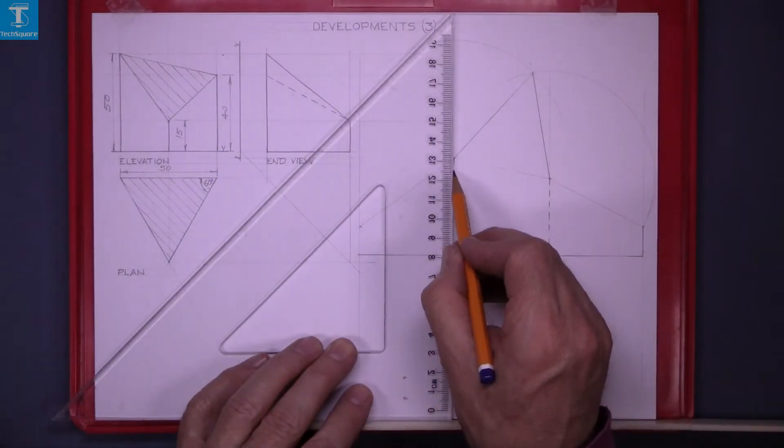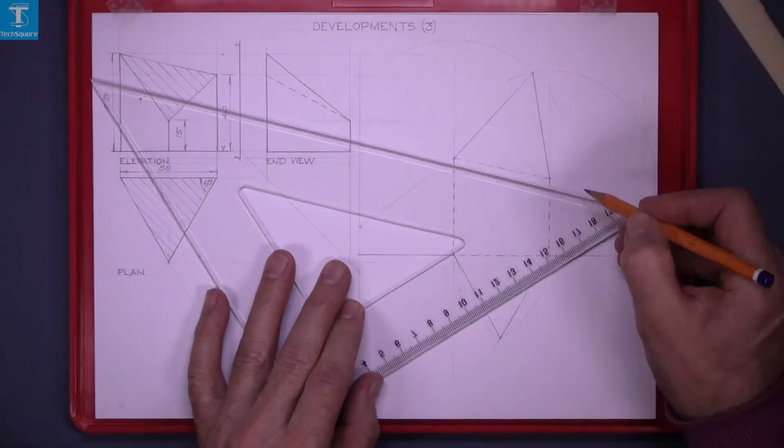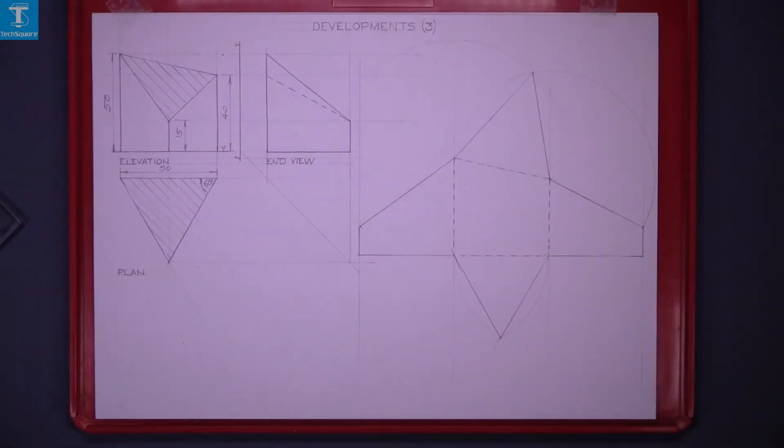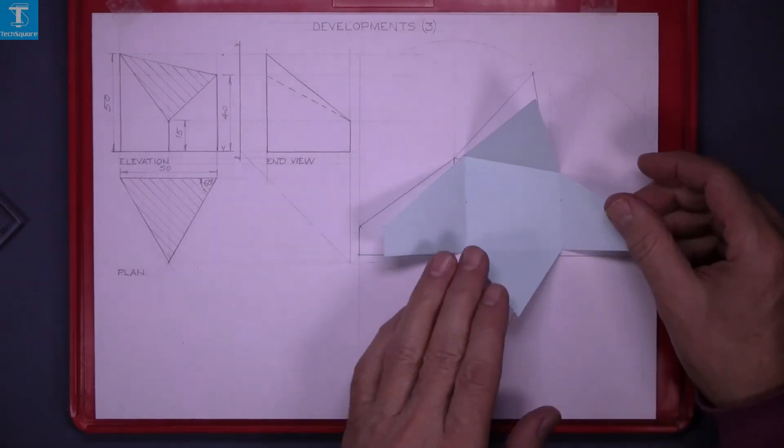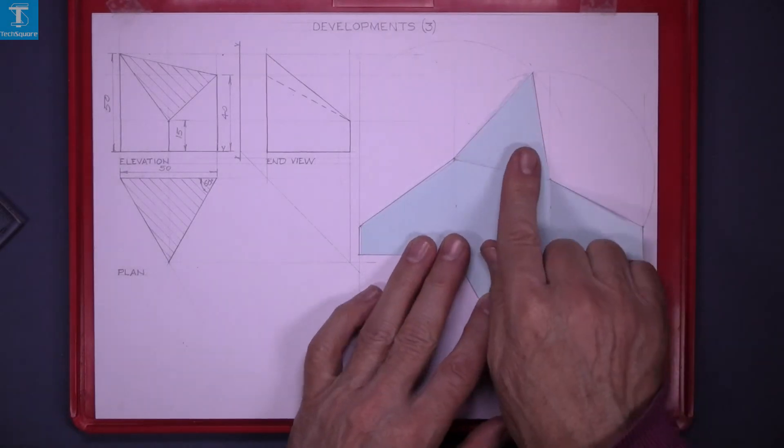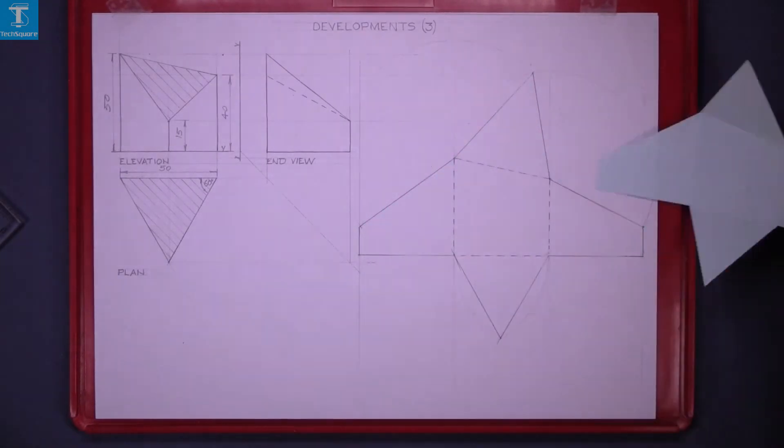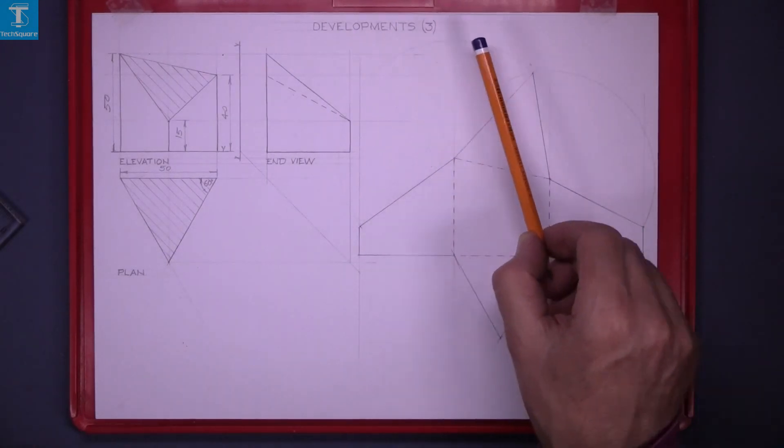Using solid lines where the cut is and dotted lines where you are folded. And that's the development. And this is the original model. Developments 3 complete.